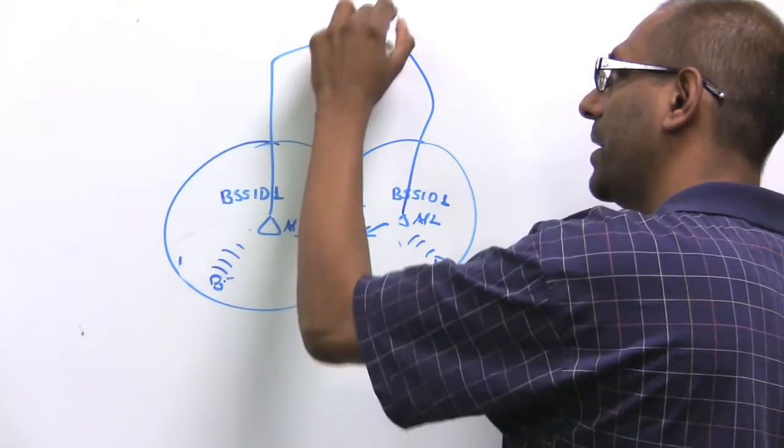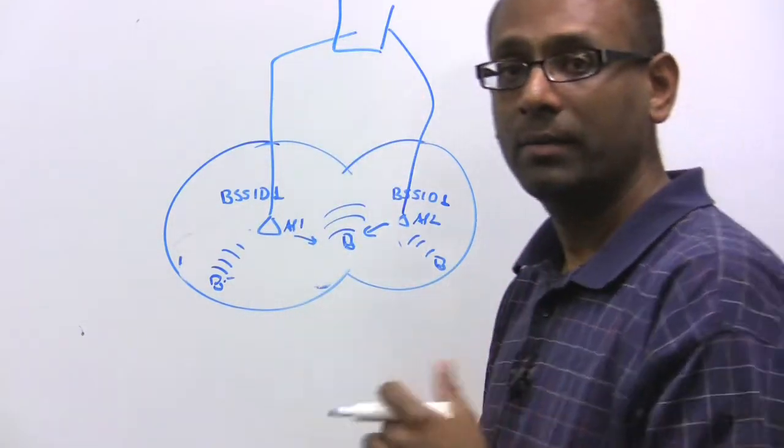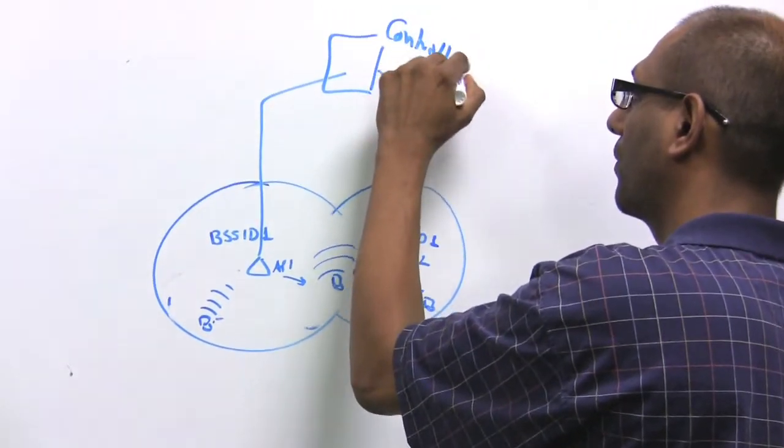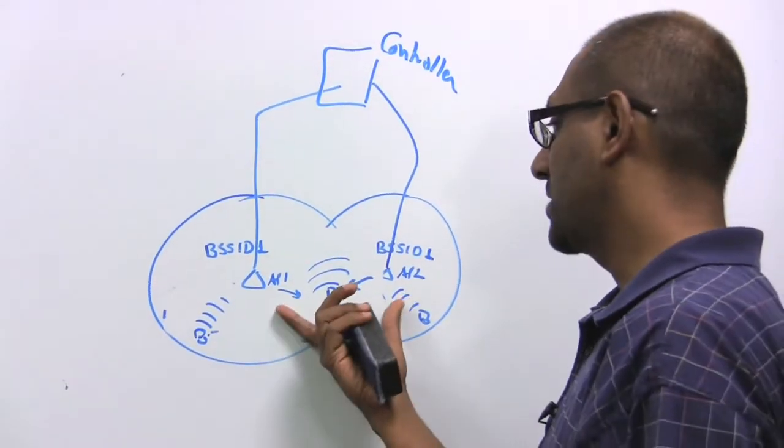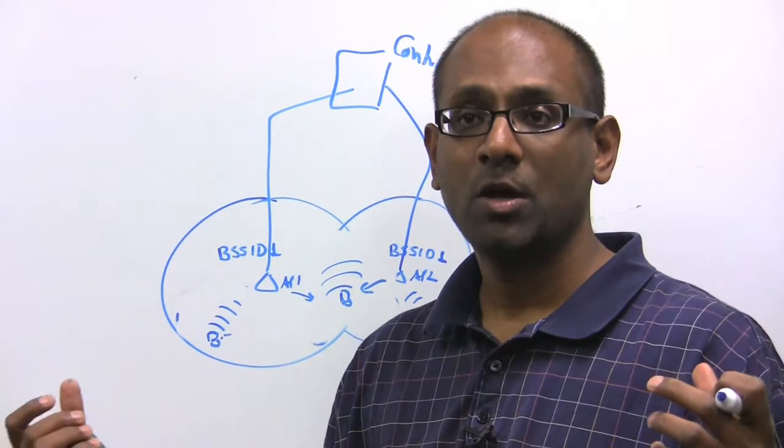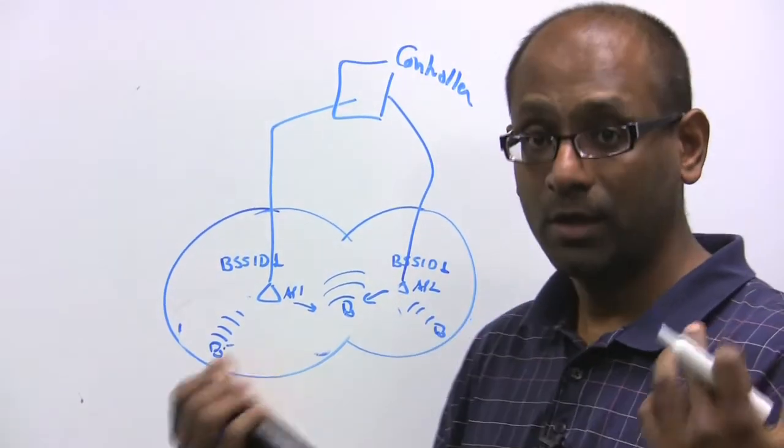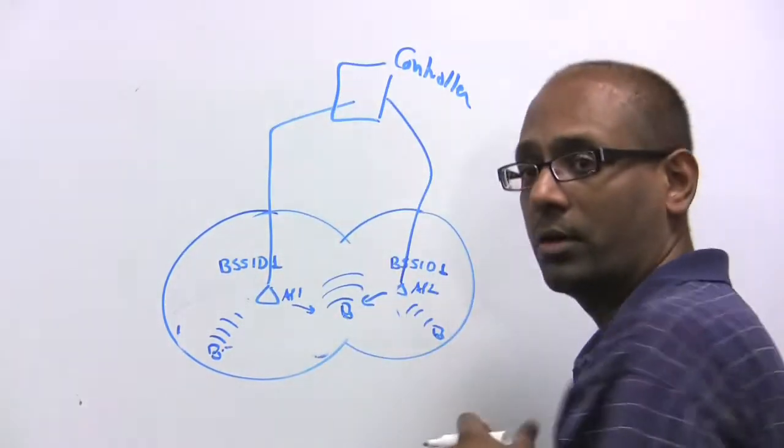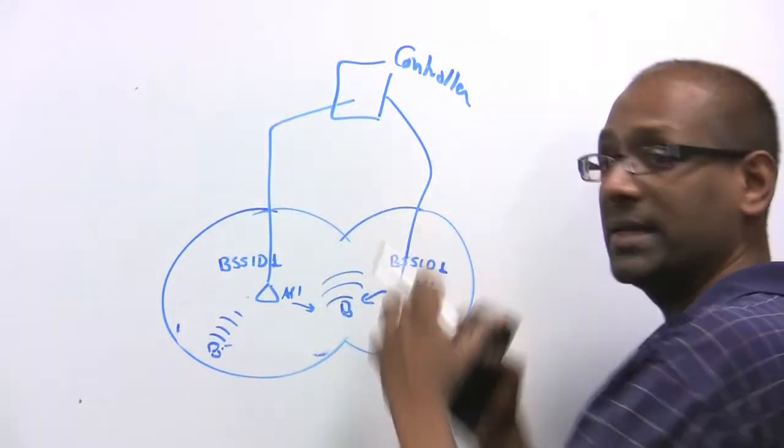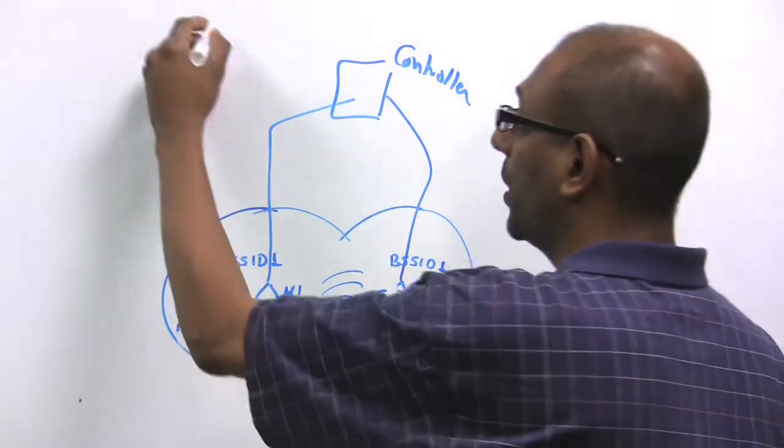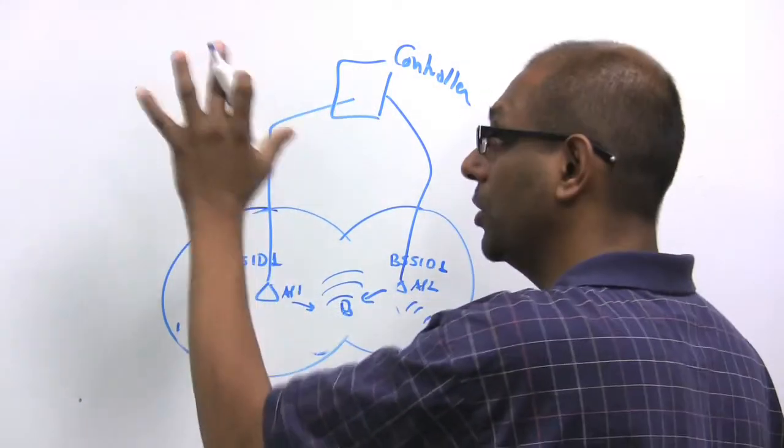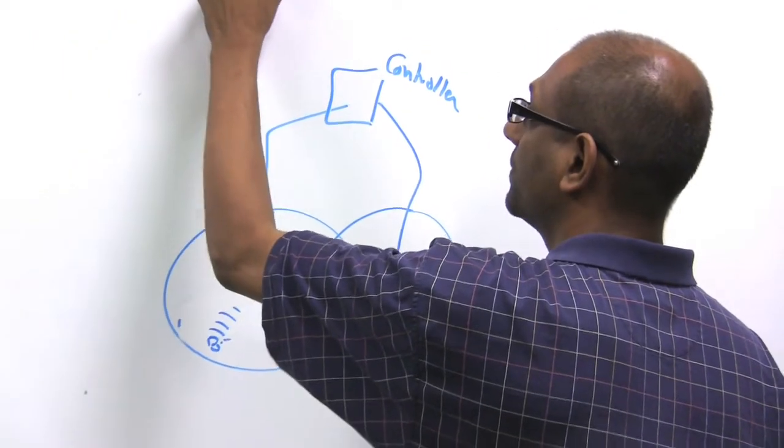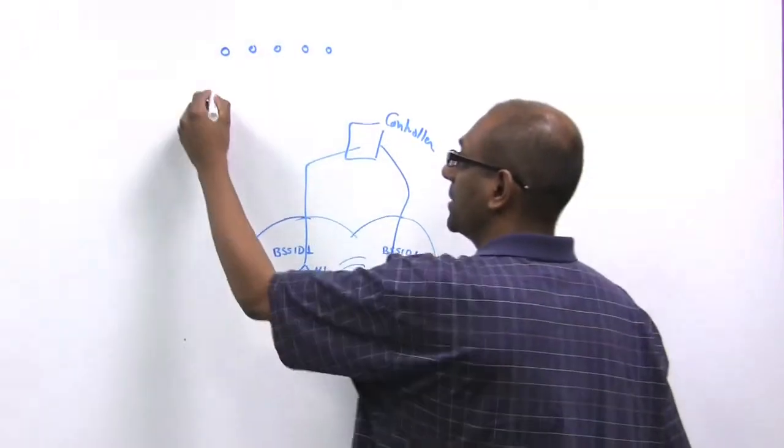Access points are connected through a back-end fabric to a controller. And periodically, access points compose a message digest of all the devices that they see with the corresponding RSSI, frame rates, number of transmissions, etc., up to a controller. So the controller basically has a global view. So what it has in terms of its topology view is the following. It sees a bunch of access points. It sees a bunch of stations.